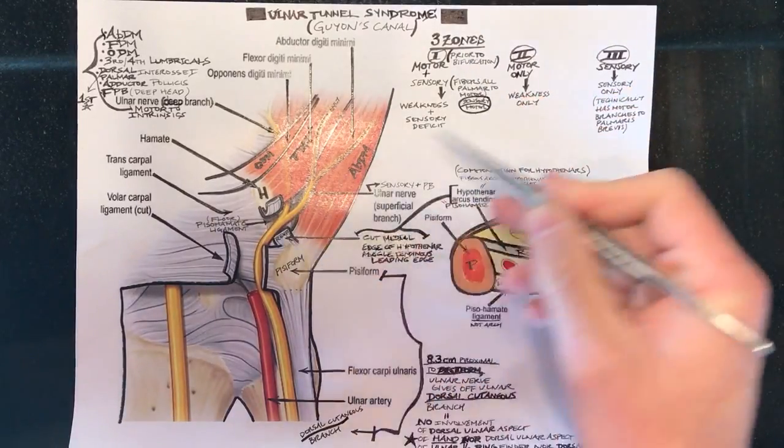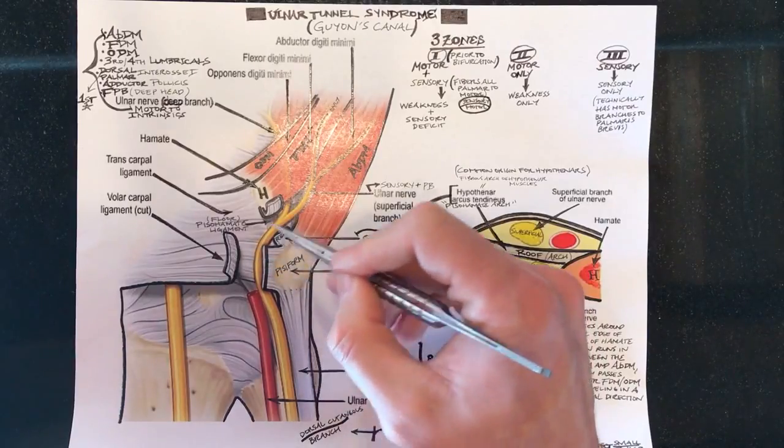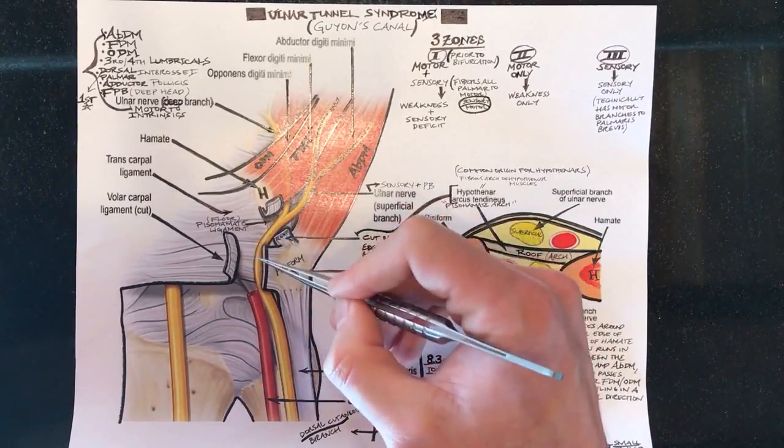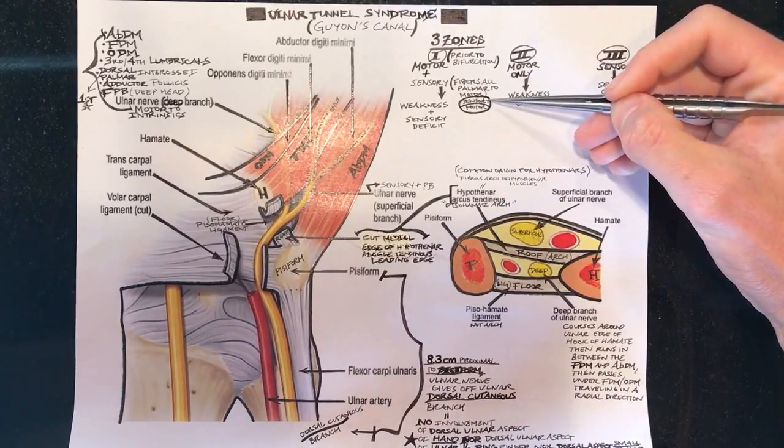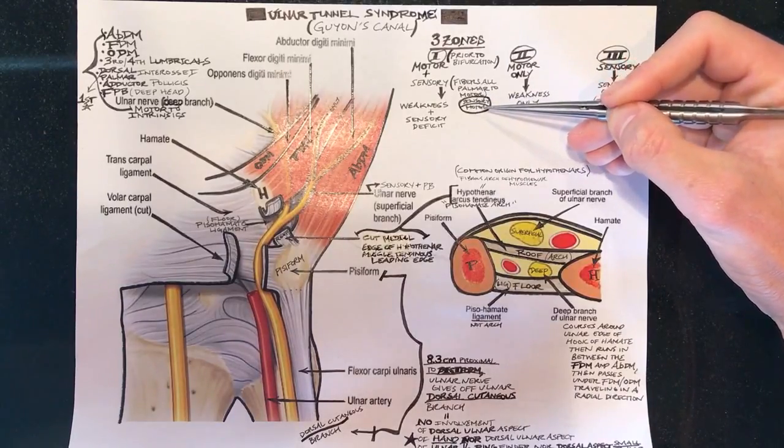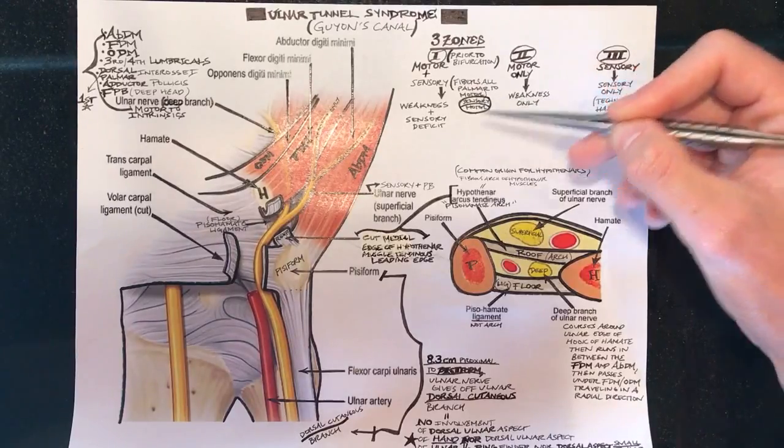So again zone one is essentially prior to the bifurcation because that's when it's still the ulnar nerve that's mixed motor and sensory and the sensory fibers or fascicles are volar to the motor fascicles. That makes sense right? The motor is going to go deep so why would they be running on top and when it's ulnar nerve proper.